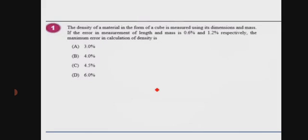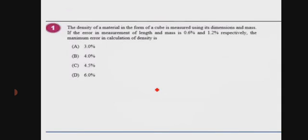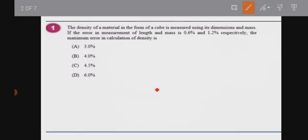First question: the density of a material in the form of a cube is measured using its dimensions and mass. The error in the measurement of length and mass is 0.6% and 1.2% respectively. We need to find the maximum error in the calculation of density.